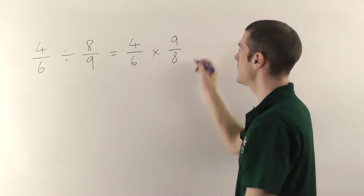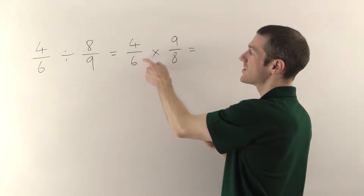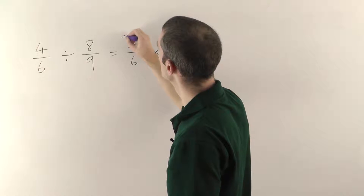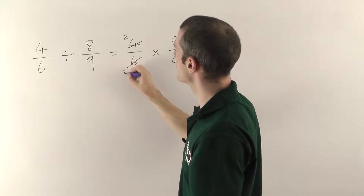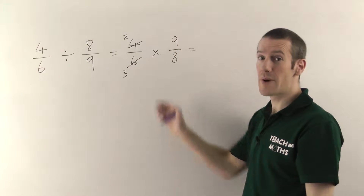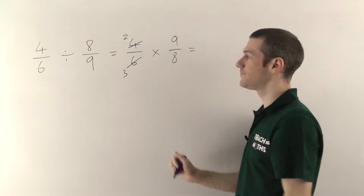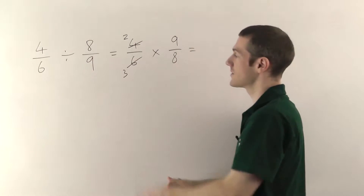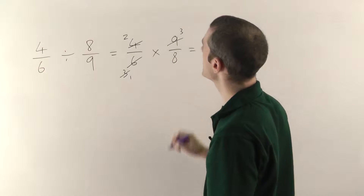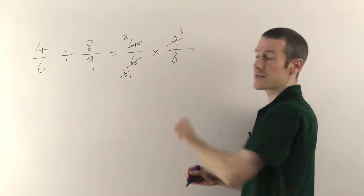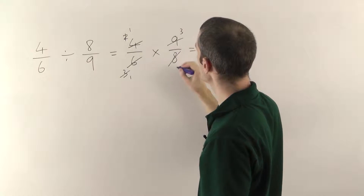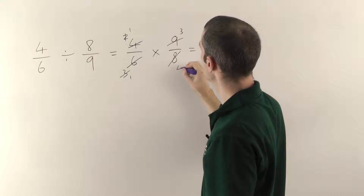So I'll just do this quickly. Always try and cancel first. The 4 and the 6 are both divisible by 2. So 2s into 4 go 2, and 2s into 6 go 3 times. See if there's anything else that'll cancel — remember you can cancel diagonally as well. So the 3 and the 9 will cancel: 3s into 3 go once, 3s into 9 go 3 times. And the 2 and the 8 will cancel as well: 2s into 2 go once, and 2s into 8 go 4 times.